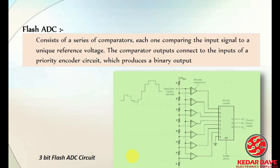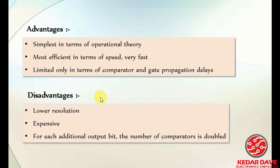For the flash ADC, several operational amplifiers are used as comparators. The op-amp will compare the reference value with the existing input value and give you some output at the output terminals. This is how the flash ADC works.